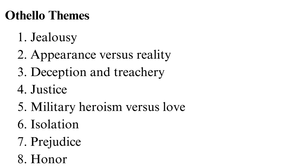Jealousy is the main trigger of conflict in the story. Instances include Iago's jealousy of Cassio and Othello's jealousy of what he believes is Desdemona's infidelity. Iago also suspects that Othello had relations with Emilia, leading to jealousy. Jealousy is a strong emotion and always leads to negative results, so it is no wonder that both characters plot against those they feel have wronged them.